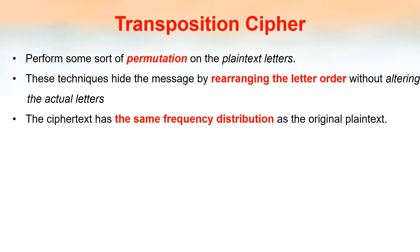Transposition ciphers perform some sort of permutation on the plaintext letters, which means the plaintext letters are rearranged. The letters are not changed, just their arrangement is changed. The cipher text has the same frequency distribution as the original plaintext.